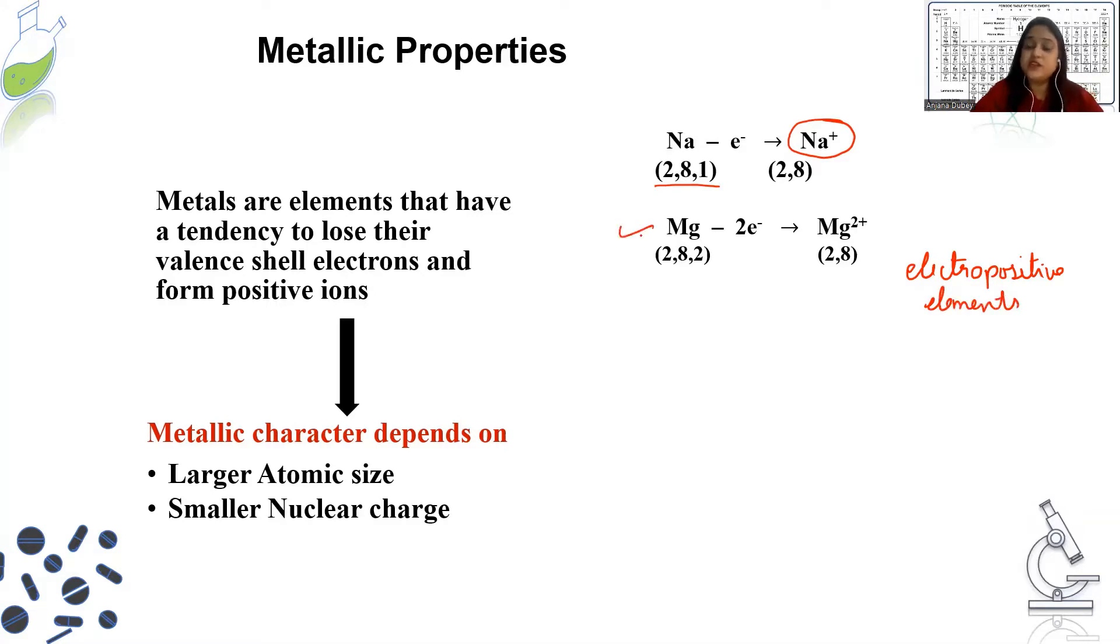Metals are also called as electropositive elements. We call metals as electropositive elements. Because they have a tendency to be positive. Their electronegativity value is very, very low. So, we say that they are not electronegative. Instead, they are electropositive elements. Similarly, I have given you the equation for magnesium. Magnesium is metal. Group 2 is metal. Magnesium is a white, shiny metal. This metal has an electronic configuration of 2,8,2.